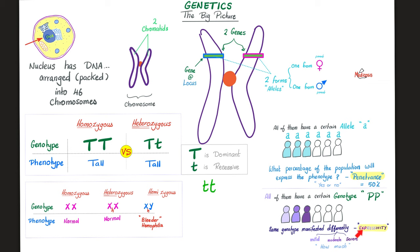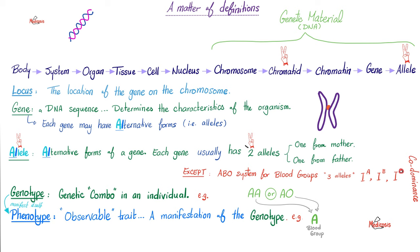Let's recap. Your body is made of systems; each system has organs; each organ has tissues; each tissue has cells; each cell has a nucleus. The nucleus has 46 chromosomes; each chromosome has two chromatids, which are chromatin. A piece is called the gene. You got a copy from mommy, a copy from daddy — these alternative copies are alleles. The locus is the location of the gene on the chromosome. So what's a gene? A piece of the DNA, a sequence of DNA which determines your characteristics. Each gene may have alternative forms known as alleles. Usually each gene has two alleles — one from mommy, one from daddy. Do we have exceptions? Yes.